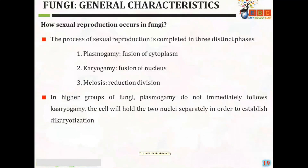How does sexual reproduction occur in fungi? The process of sexual reproduction is completed in three distinct phases: plasmogamy, karyogamy, and meiosis. Fusion of cytoplasm is called plasmogamy; fusion of nuclei is called karyogamy; and reduction division, when the number of chromosomes is reduced, is called meiosis. In higher fungi, plasmogamy does not immediately follow karyogamy — the cell holds two nuclei separately in order to establish dikaryotization.